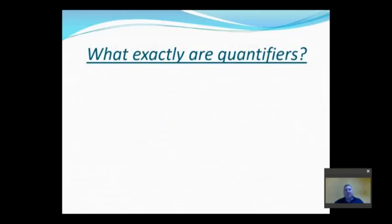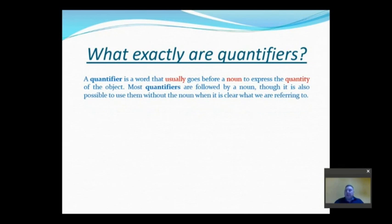Now, what exactly are quantifiers? Well, the definition is as follows: a quantifier is a word that usually goes before a noun to express the quantity of the object. Most quantifiers are followed by a noun, though it is also possible to use them without the noun when it is clear what we are referring to.